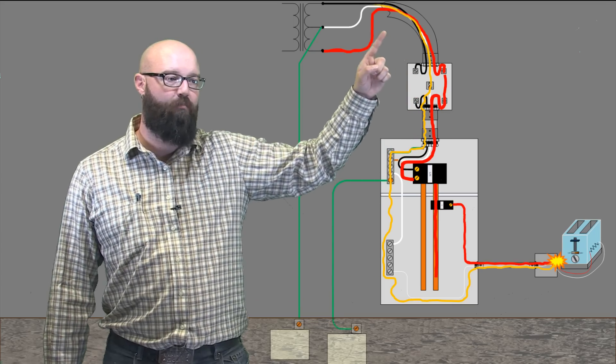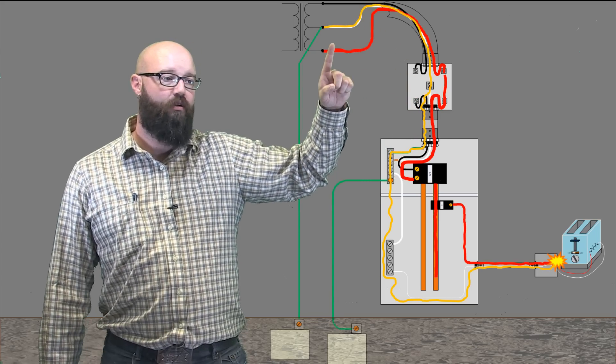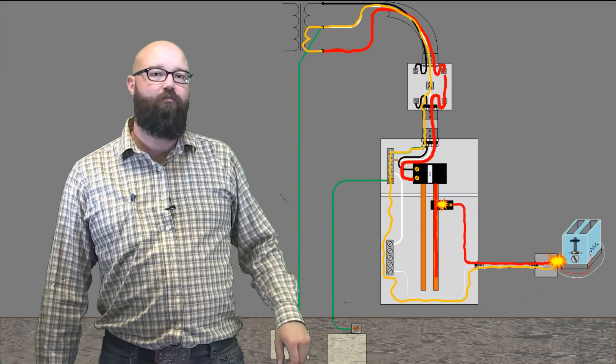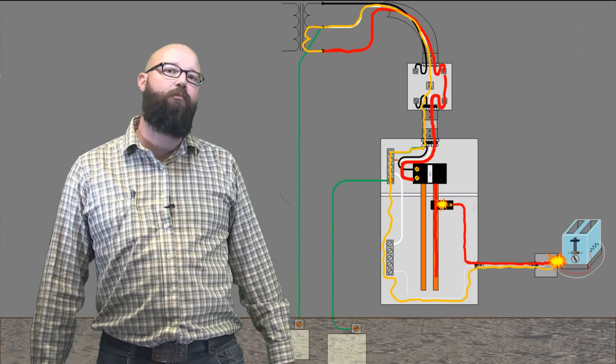And again, that fault current can make its way back to neutral, back to the supply, which trips the breaker. Why did it trip the breaker? Same reason it did before.